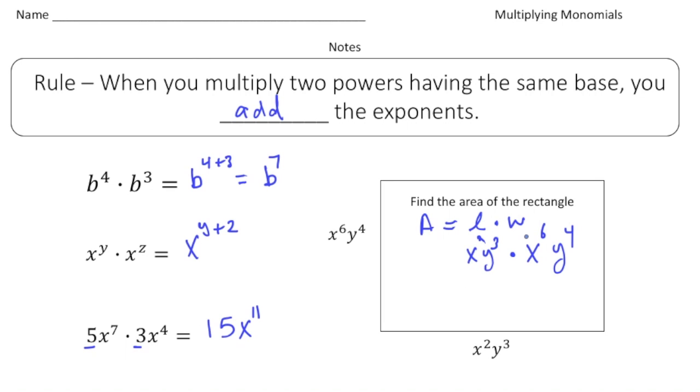We're going to first multiply x squared times x to the sixth because they have the same basis, so that's going to be x to the eighth because two plus six gives you eight. And then we have the y cubed and y of the fourth. Again they share a common base of y, so that's going to be y to the three plus four, which is seven.